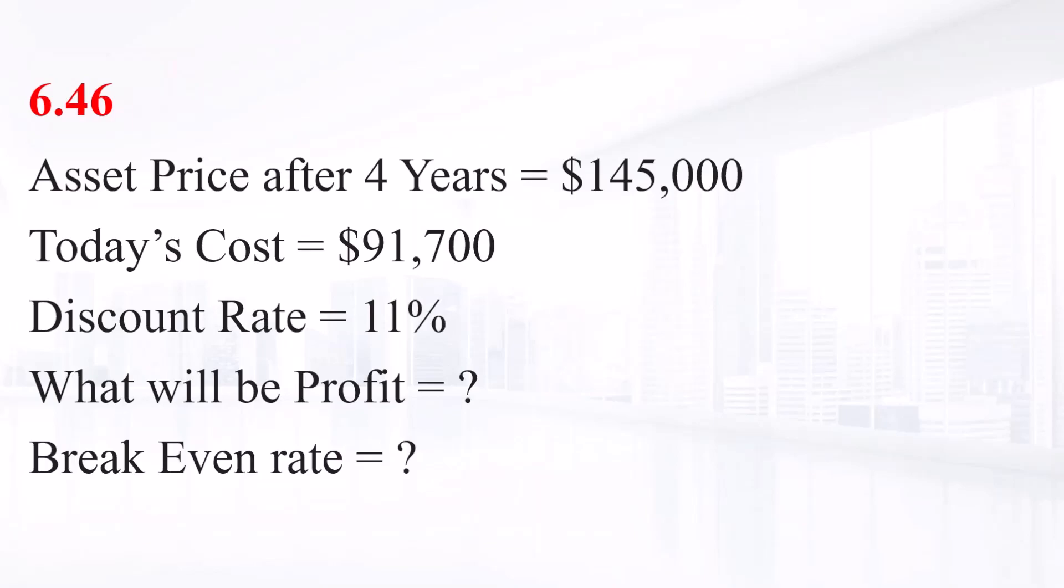Consider a firm with a contract to sell an asset for $145,000 four years from now. The asset cost $91,700 to produce today, given a relevant discount rate of 11% per year.